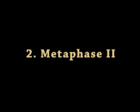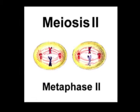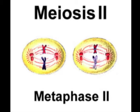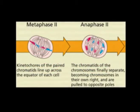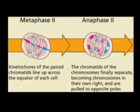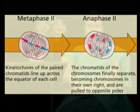Metaphase 2: During metaphase 2, the chromosomes get arranged on the equator of the spindle. The centromere divides into two, producing two daughter chromosomes. The microtubules of the spindle are attached to the centromere of the chromosomes.